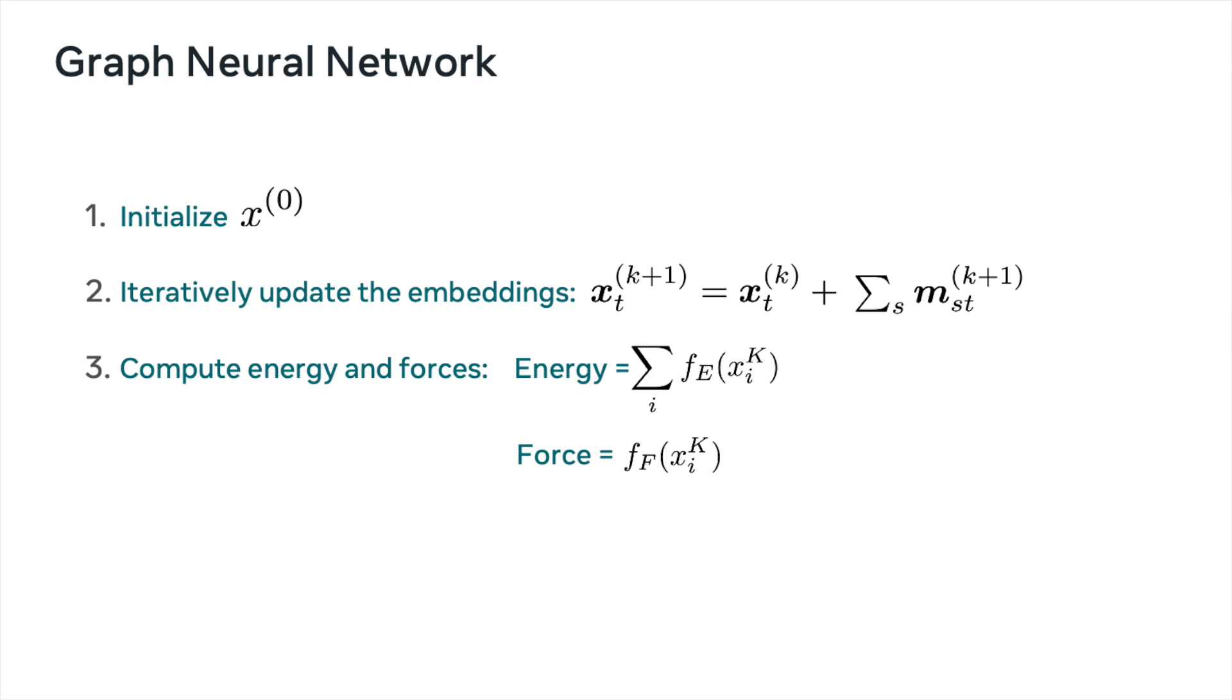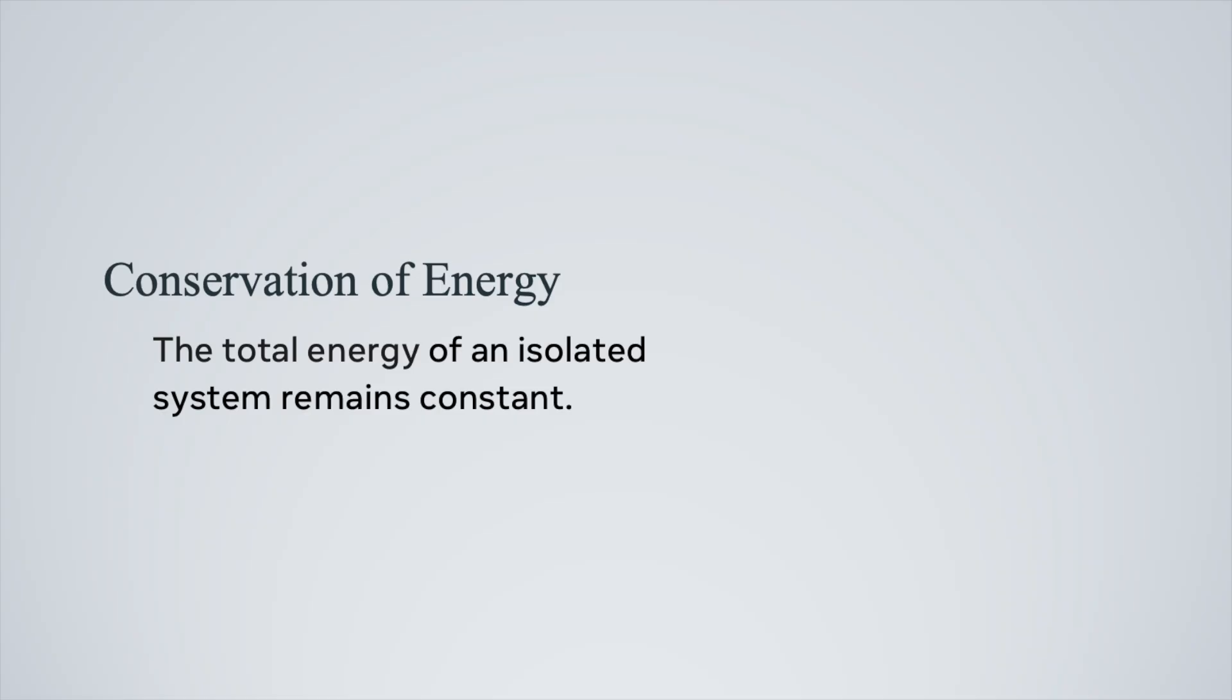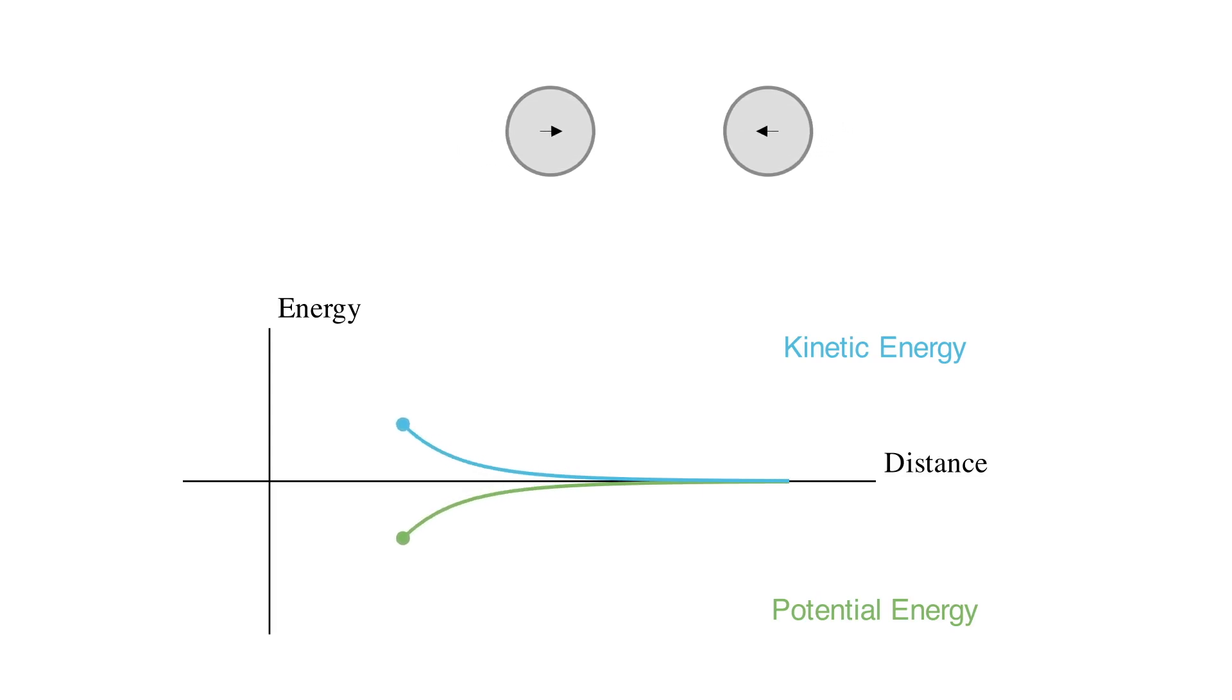So one thing that's really important to understand about this approach that computes the forces directly is that it's not energy conserving. Energy conserving means that the total energy of an isolated system does not change. For example, if we had a closed system with two atoms, as the atoms move closer together, the potential energy decreases. This might seem to violate energy conservation, but what's really happening is that as the atoms move closer together, their velocity is increasing. And as the velocity increases, so does their kinetic energy. And as the potential energy decreases, the kinetic energy increases, and this perfectly offsets to conserve the overall energy of the system.